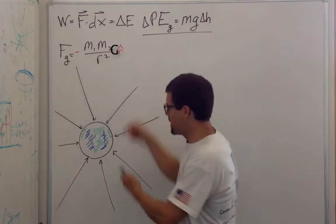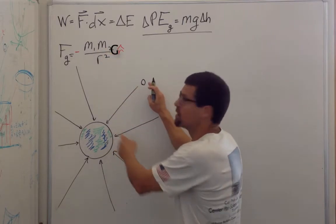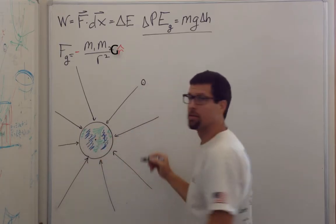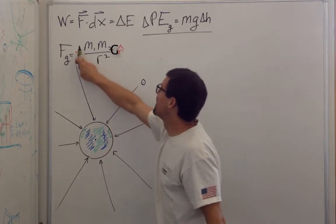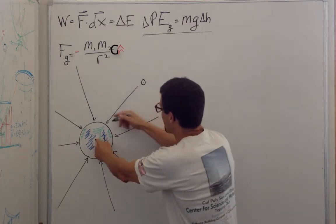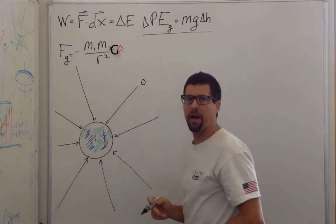The force of gravity is the product of the two masses divided by the distance between the two centers, directed in the negative radial direction. So if this is a radial direction, this guy is directed inward.